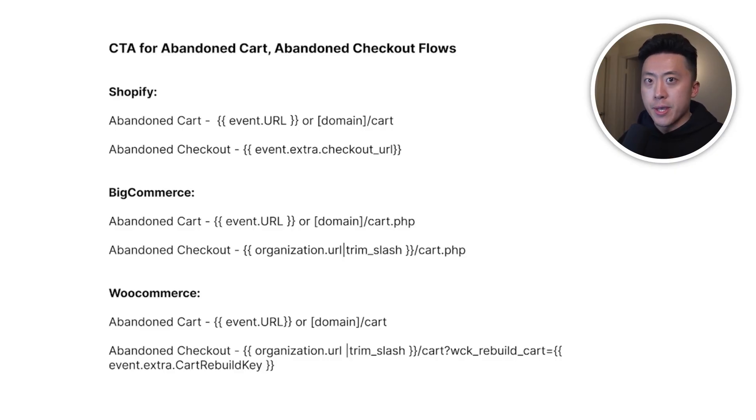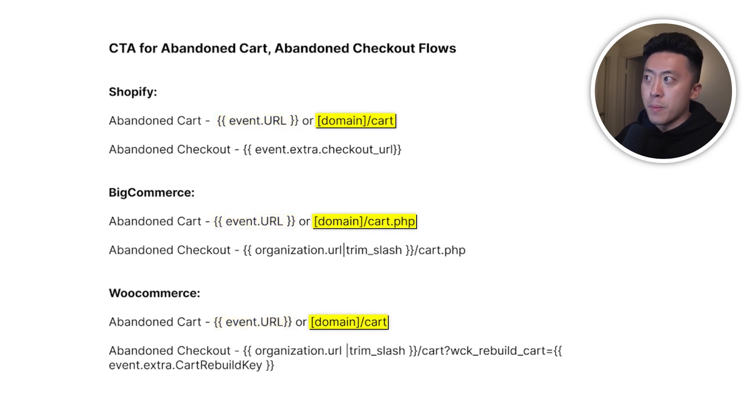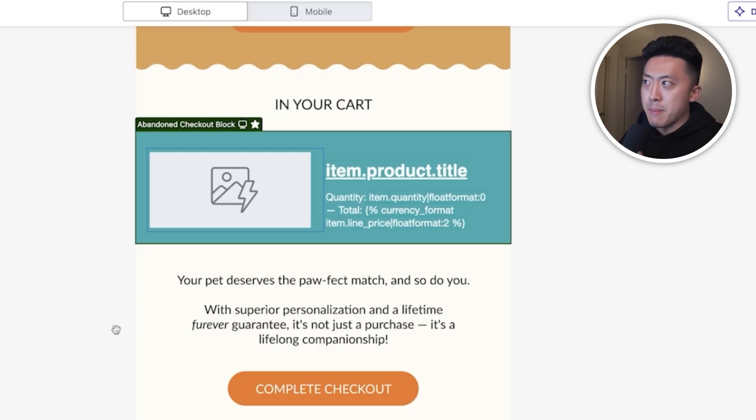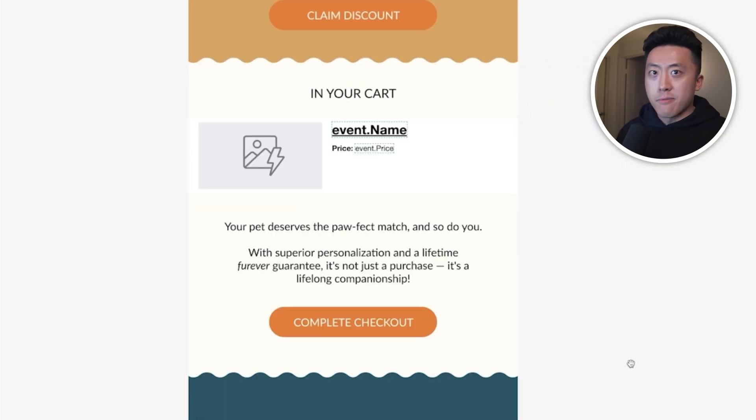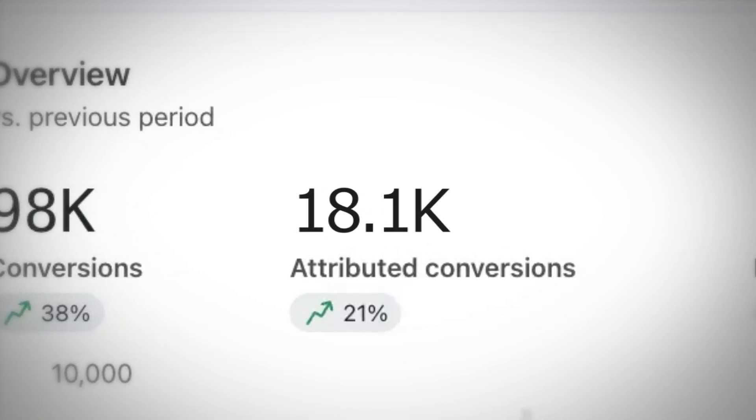Now we need to use the correct link for the abandoned cart email. There are two ways to do this: use the product page link of the cart item, which is the event URL, or send them directly to the cart page, which is your domain slash cart. If you're using Shopify, the reason we sometimes use event URL is that sending users to slash cart — a static link — doesn't always load the items they had previously, especially if they're on a different device or have cleared their browser cache. I recommend A/B testing with conversion rate as your KPI. Back in Klaviyo, swap out the dynamic product block for the abandoned cart block, customize it to match your Figma design, clone it and adjust font sizes for mobile, then preview and test everything just like you did for the abandoned checkout flow.